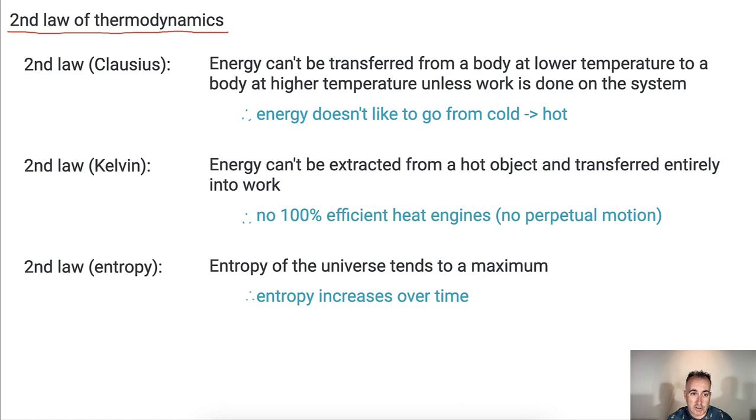So, let's talk about the second law of thermodynamics. There's a few different formulations. There's the Clausius version, the Kelvin version, and we'll do the entropy version as well. So, the second law, really, is all about, well, energy can't be transferred from a lower temperature to a higher temperature unless work is done on the system. What it really means is just energy doesn't like to go from cold to hot. For example, if I had a cup of hot chocolate in my hand, and I'm sitting in a room, there's no way the hot chocolate's going to get even hotter. The hot chocolate's going to get colder, because it's going to go from hot to cold.